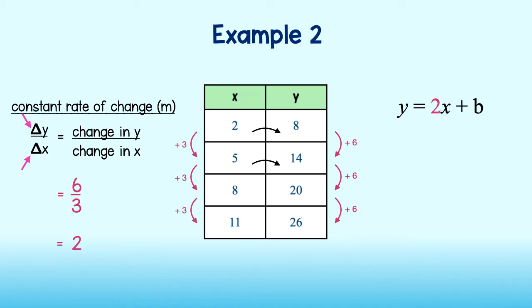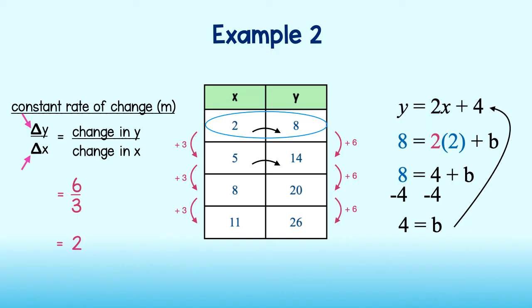Lastly, I must find the y-intercept, or b. To do so, I will choose one pair of values from my table and plug them into my equation. Great! Now I will just solve for b. 2 times 2 is 4. Then, subtract 4 from both sides to see that b is equal to 4. I can plug 4 in for b into my equation to see that the equation that represents this table is y equals 2x plus 4.